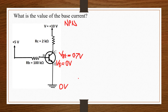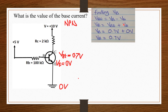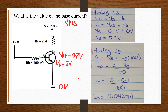Knowing VBE and VE, we can find VB. Using VBE equals VB minus VE, and inputting values for VBE and VE, we get VB equals 0.7 volts. With 5 volts supply and the resistor at B equal to 100 kilo ohms, we find IB: 5 minus VB over 100 equals 5 minus 0.7 over 100. Computing this, IB equals 0.043 milliamperes. The base current for this transistor is 0.043 milliamperes.